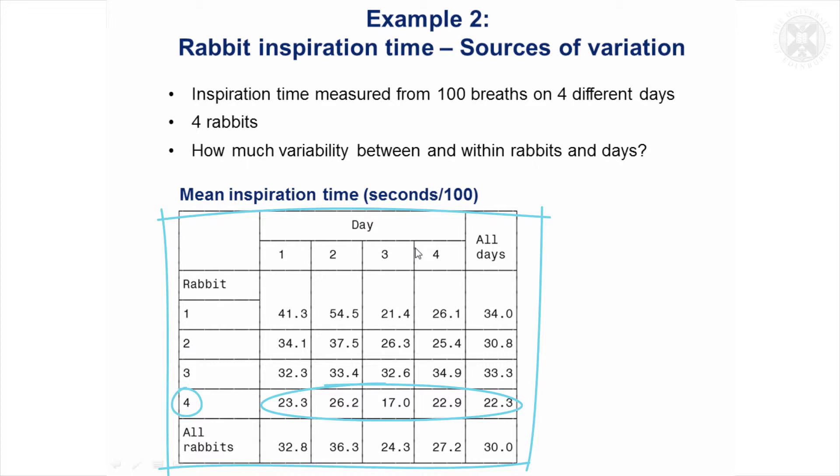Possibly that rabbit was younger. I don't know anything about the rabbits, but presumably all these four rabbits were the types that were going to be used in the eventual experiment. And then even from day to day, on a particular day, the rabbits varied a lot.